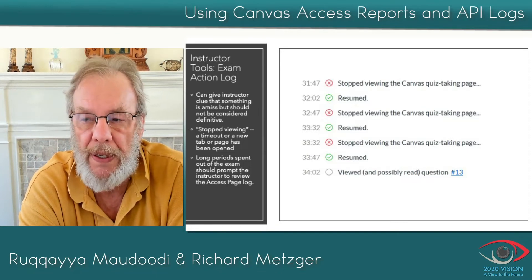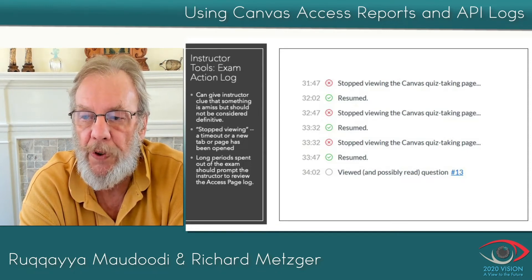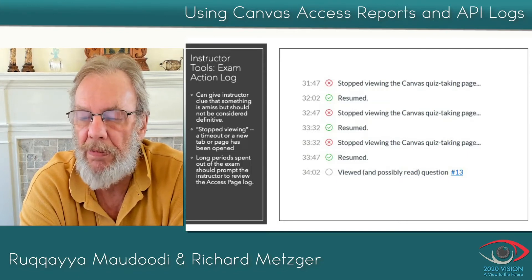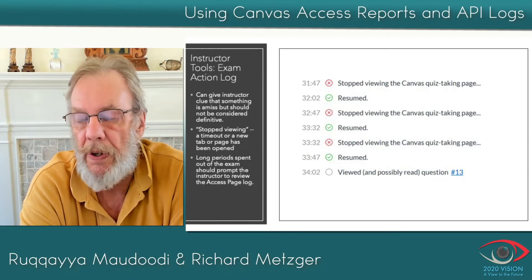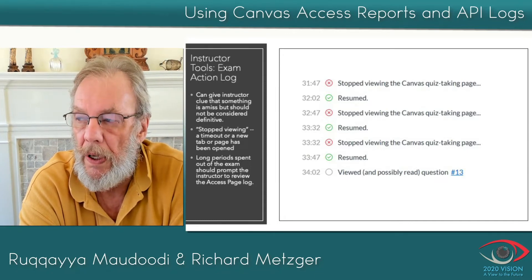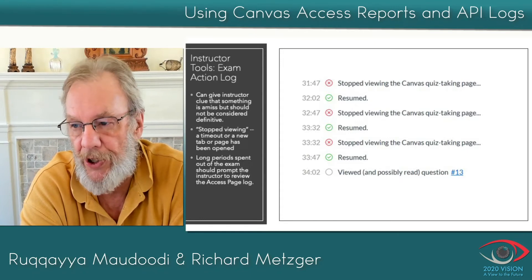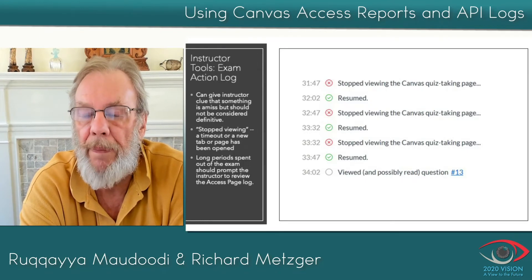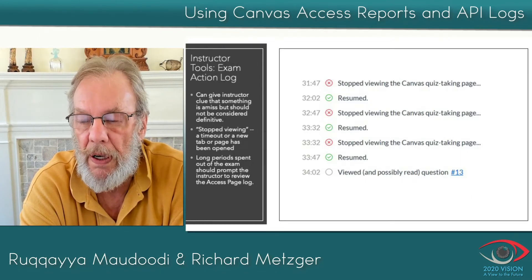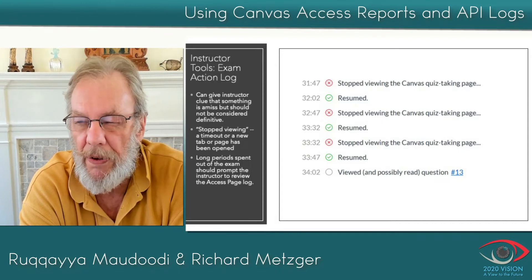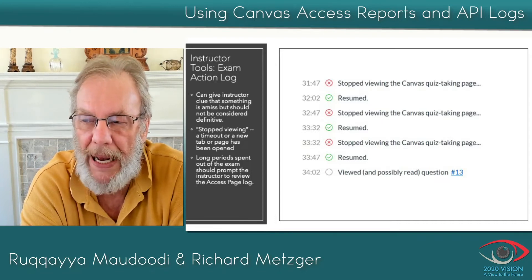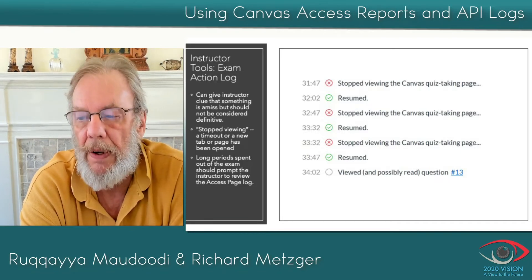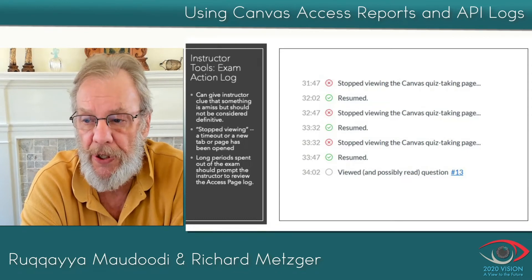That could mean one of two things: that the student has surfed away from the exam, or it could mean that there's a timeout. The timeout period is about 30 seconds. So if a student stops to ponder what he or she is going to write for an essay question, that red X could very likely appear. Most of the time you'll see a pretty uniform time passage between the answering of questions — it's only when you have long periods out that suspicions should be raised.